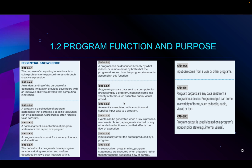Program inputs are data sent to a computer for processing by a program. Input can come in a variety of forms such as tactile — meaning touching like a touch screen — audio, visual, or text. An event is associated with an action and supplies input data to a program; for example, on-event you click a button, it does something. Events can be generated when a key is pressed, a mouse is clicked, a program is started, or any other defined action occurs that affects the flow of execution. In event-driven programming, program statements are executed when triggered rather than through sequential flow of control.